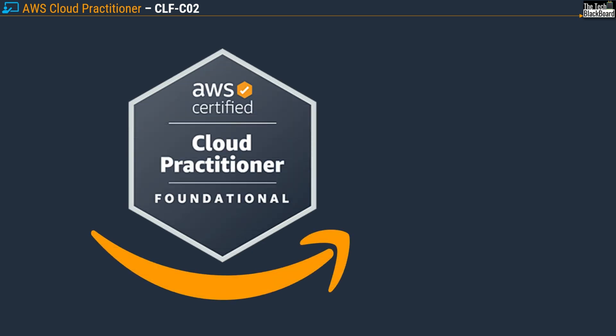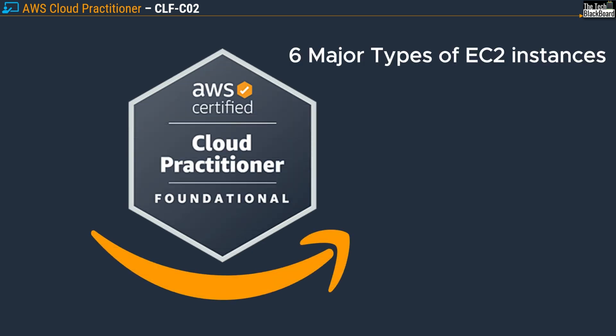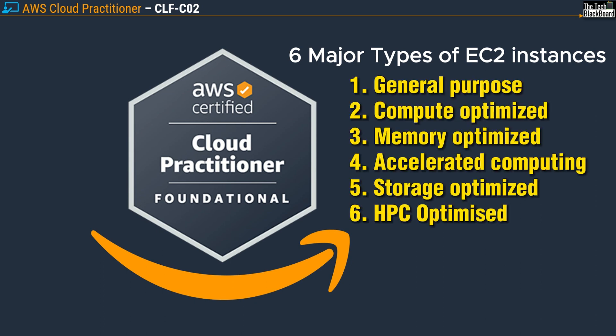Hello and welcome back to the Tech Blackboard. Do you know there are six major types of Amazon EC2 instances? General Purpose, Compute Optimized, Memory Optimized, Accelerated Computing, Storage Optimized, and finally HPC Optimized. Quite a handful of questions in the AWS Certified Cloud Practitioner Exam come from this topic. So let's start today's session with questions on various types of Amazon EC2 instances. I have collected six questions so that you are familiar with each type and are well prepared for the exam.